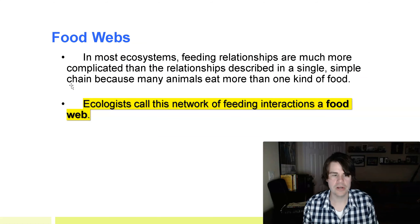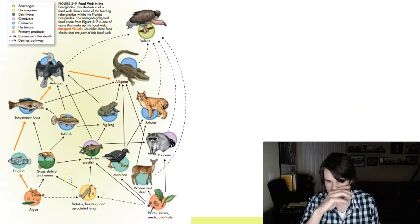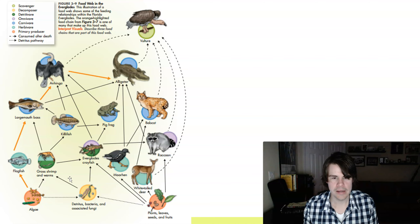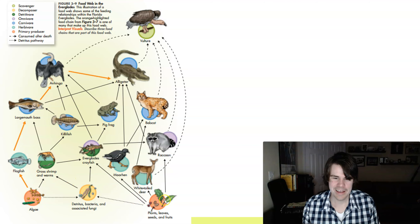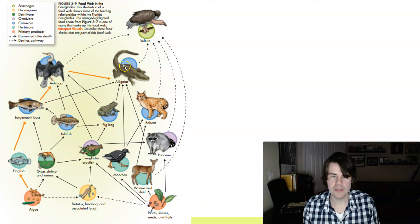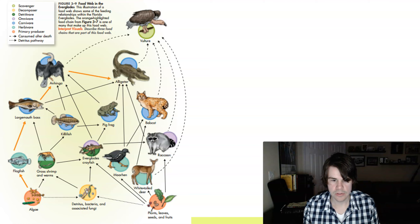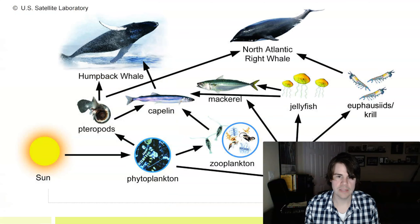Food webs are more complex networks. Here's a more complete food web in the Everglades. You can see the producers are the foundation, and you can track energy flow. The orange was the food chain I showed you, but a couple of things were missing from that food chain model: we didn't show scavengers like the vulture, and we didn't show decomposers — bacteria and fungi — which return nutrients back into the system. That recycling of nutrients is very important.